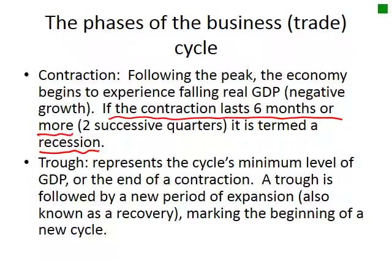In the contraction following the peak, the economy begins to experience falling real GDP, which is negative growth. It's important to know the definition: a recession is when the contraction lasts six months or more. The technical definition is when GDP has fallen for six months or more, or two successive quarters.